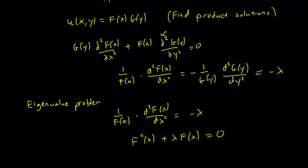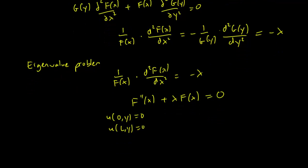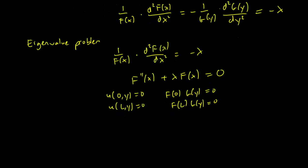So we need to write down u(0,y) is 0, and u(l,y) is 0. And this becomes f(x) times g(y), sorry, f(0) times g(y) equals 0, and f(l) times g(y) equals 0. So this suggests strongly that f(0) is 0, and f(l) is 0.